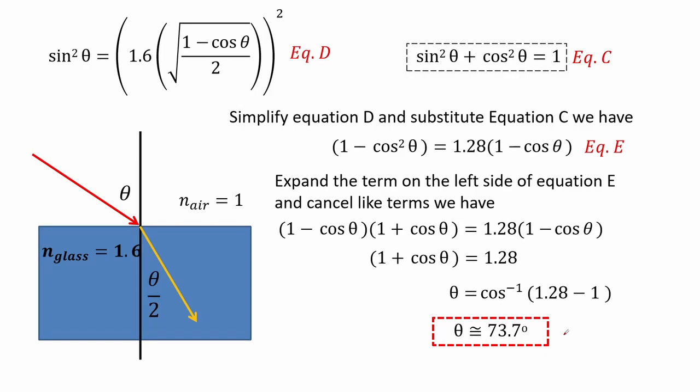We then simplify equation D and substitute equation C on the left term and get equation E. We can expand the left term of equation E and we see that we can cancel similar terms on both sides.